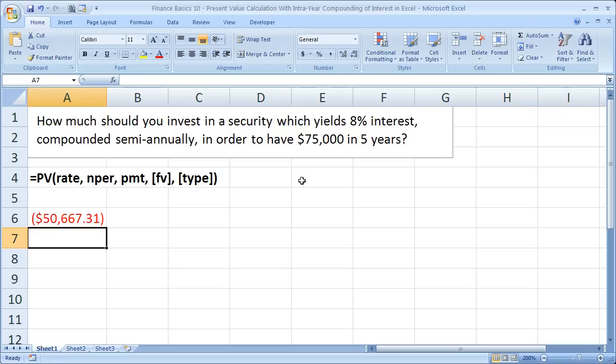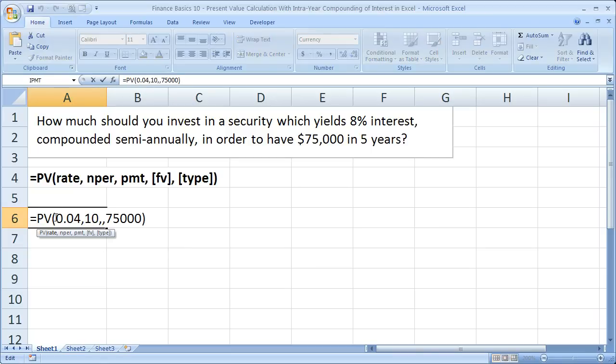And we see that the present value of this or what we have to invest today is going to be $50,667.31. Now it's a negative sign because the present value is represented as a cash outflow.